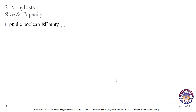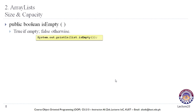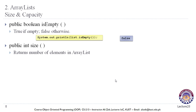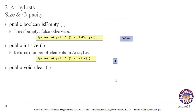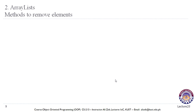The isEmpty method checks if the ArrayList is empty, returning true if empty and false otherwise. System.out.println(list.isEmpty()) returns false in this case. The public int size method returns the number of elements — the size of our ArrayList is four in this example. The public void clear method removes all elements and the size becomes zero.